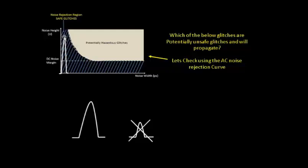But if you plot the glitch width from this point and try to find out whether it falls in the blue area, we see that yes, it falls in the blue area. Hence, this particular glitch is again a safe glitch and will get absorbed by the next stage.